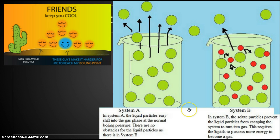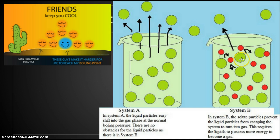In System A, the liquid particles easily shift into the gas phase at normal boiling pressure — there are no obstacles, so molecules bounce around and become free gas. In System B, solid solute particles prevent the liquid particles from escaping to turn into gas. It's like billiards: the particles bounce back when they hit a solute molecule. The liquids must possess more energy — therefore a higher temperature — to boil and become a gas.